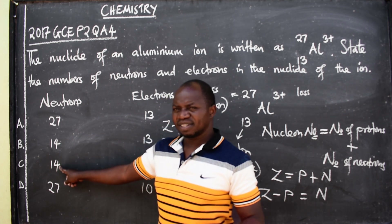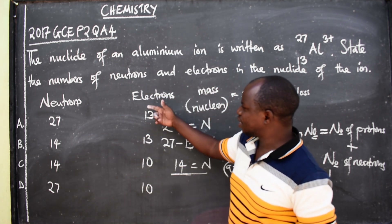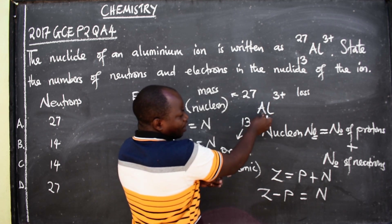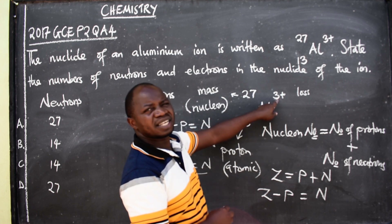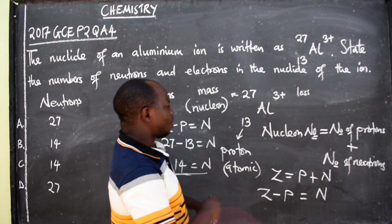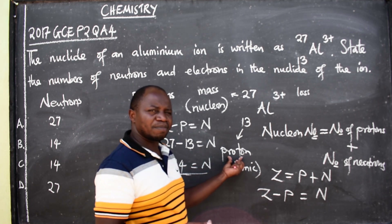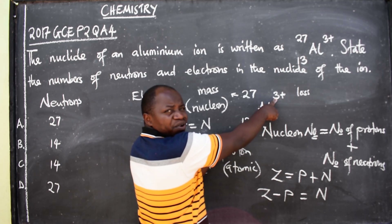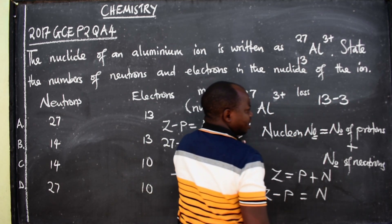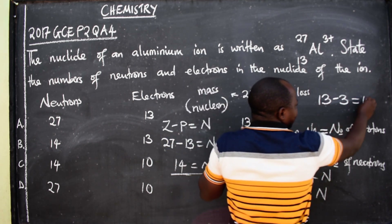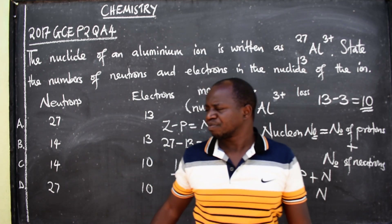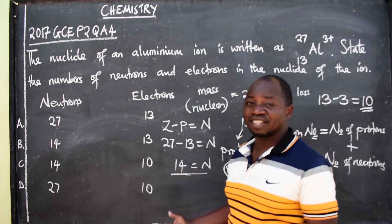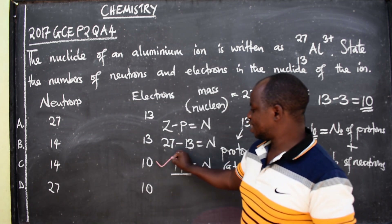The difference between B and C is only the number of electrons. For aluminium to be stable it has to lose three electrons. The number of protons equals the number of electrons, so there are 13 electrons. When aluminium loses three electrons, 13 minus 3 gives us 10. So the number of electrons is 10, and the correct answer is C.